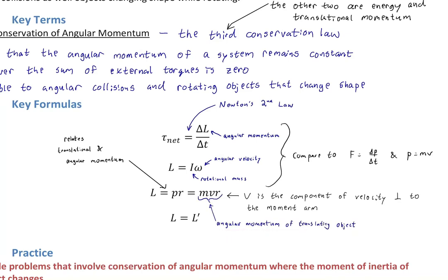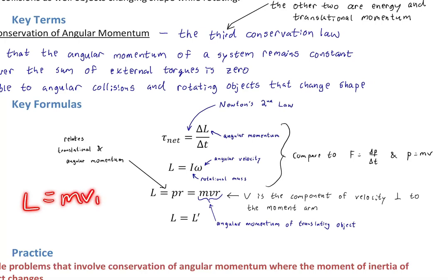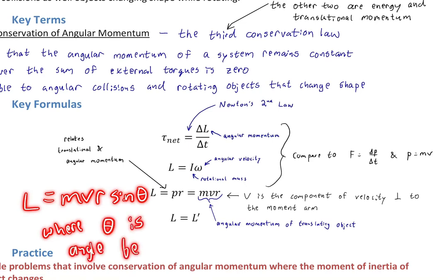For translating objects, the velocity used should be the component perpendicular to the moment arm (the radius r). In most cases, v will be fully perpendicular, so you don't need to take a component. Only in very challenging problems would you need to use v·sin(theta), where theta is the angle between v and r. So truly, L = mvr·sin(theta), but in most examples here, v is perpendicular and sin(theta) = 1.